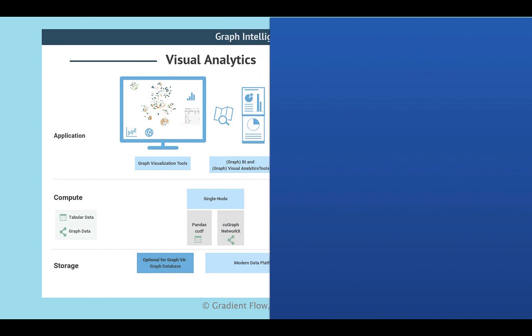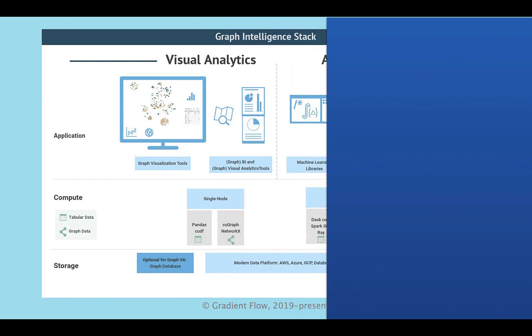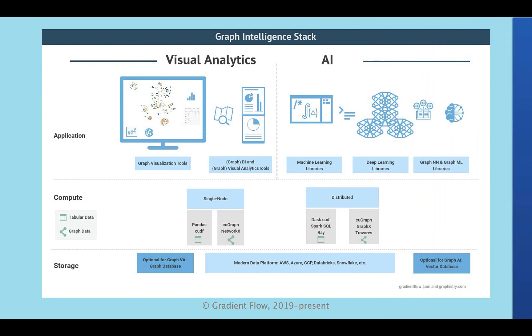Gradient Flow recommends that companies should jump in with graph visual analytics. Modern data platforms will likely suffice for your needs. Focus on business value and de-risk a subsequent or parallel initiative to adopt graph DBs.